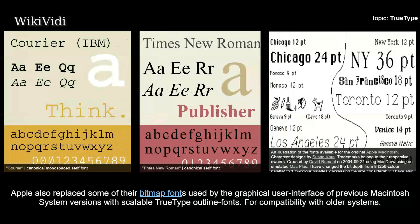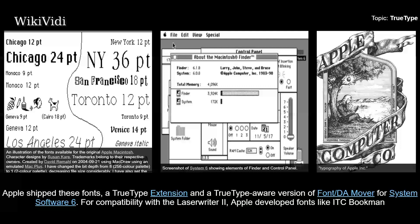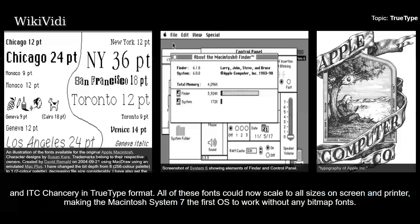Apple also replaced some of their bitmap fonts used by the graphical user interface of previous Macintosh system versions with scalable TrueType outline fonts. For compatibility with older systems, Apple shipped these fonts, a TrueType extension, and a TrueType-aware version of FontDA Mover for System Software 6. For compatibility with the LaserWriter 2, Apple developed fonts like ITC Bookman and ITC Chancery in TrueType format. All of these fonts could now scale to all sizes on screen and printer, making Macintosh System 7 the first OS to work without any bitmap fonts.